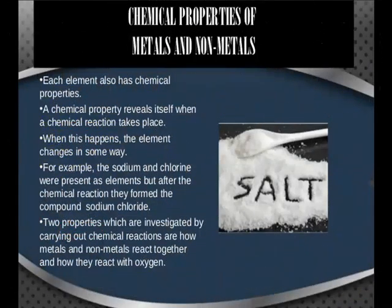These physical properties show variation in properties of metals as well as non-metals and their uses. Chemical properties of metals and non-metals: each element has chemical properties. A chemical property reveals itself when a chemical reaction takes place and the metal changes and forms a compound. For example, sodium and chlorine were present as elements — as metal and non-metal — but after the chemical reaction, they form the compound sodium chloride. Two properties investigated by chemical reactions are how metals and non-metals react together and how they react with oxygen.